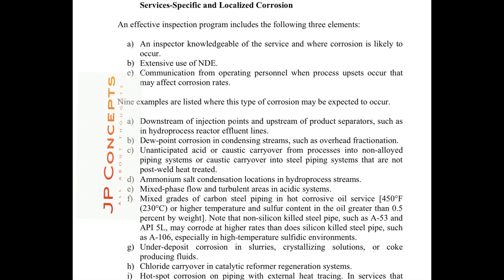An effective inspection program for localized corrosion includes three elements: 1) An inspector knowledgeable of services and where corrosion is likely to occur. 2) Extensive use of NDT. 3) Communication from operating personnel when process upsets occur that may affect corrosion rates. Examples of where localized corrosion can occur include: downstream of injection points and upstream of production separators; dew point corrosion in condensing systems; and unanticipated acid or caustic carryover from process into non-alloyed piping systems which are not post-weld heat treated.